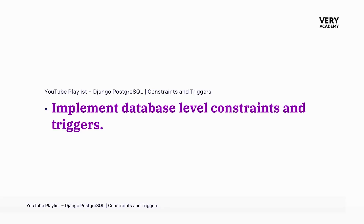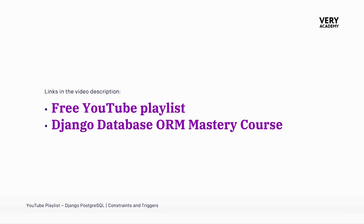If you are currently leveling up your Django and Postgres skills with this tutorial, you might like to know that this tutorial is part of a whole playlist where you will learn how to create database-level constraints and triggers with Django and Postgres. If you would like to learn more about Django ORM, do check out our Django ORM Mastery course on Udemy. Links to the playlist and course can be found in the video description.